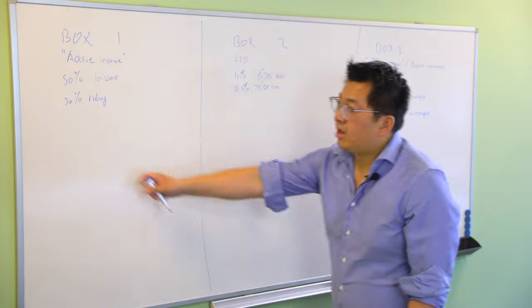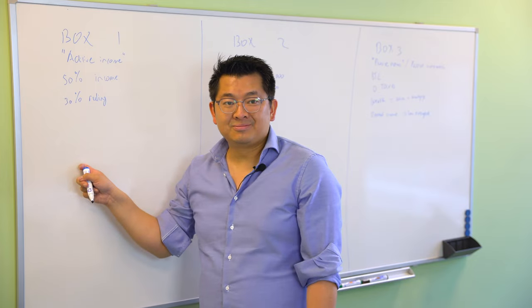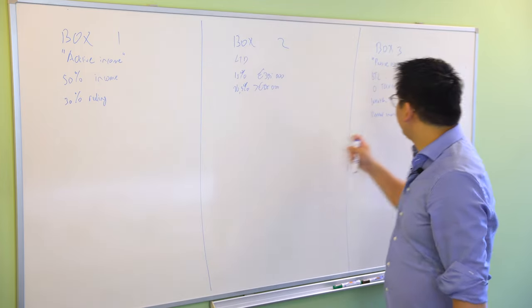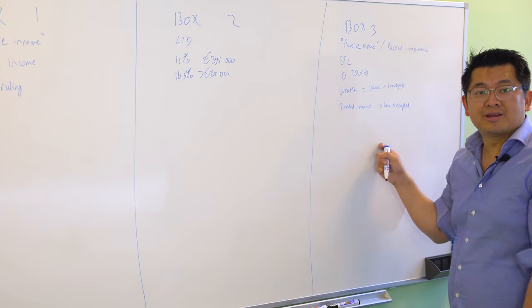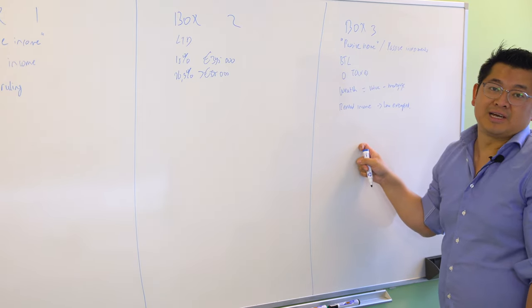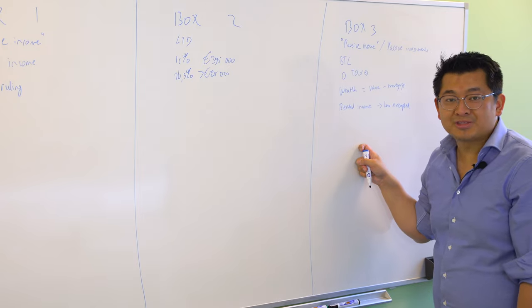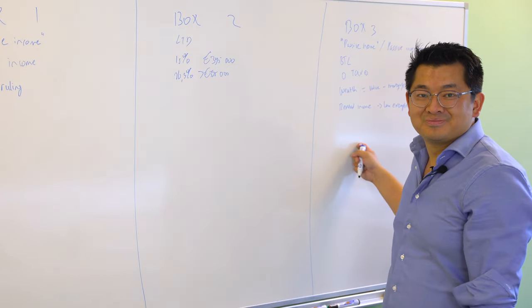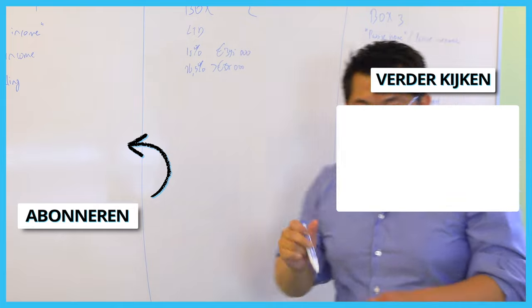Either you can make 100,000 euros of income here and pay 50 percent, or you make 100,000 euros with real estate income such as buy-to-let and not pay taxes. So my question to you is which one do you prefer?